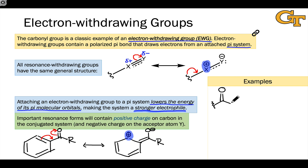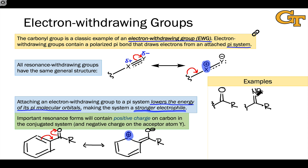Examples of electron withdrawing groups abound. The prototypical example for us is the carbonyl group — an X=Y multiple bond where carbon is less electronegative than oxygen. There's also a nitrogen analog of the carbonyl group called an imine, which I'll refer to as a glorified carbonyl group. Like the carbonyl, it consists of carbon attached to a more electronegative atom — here nitrogen — via a double bond, fitting the EWG pattern. We can imagine pushing electrons up to the imino nitrogen similarly.